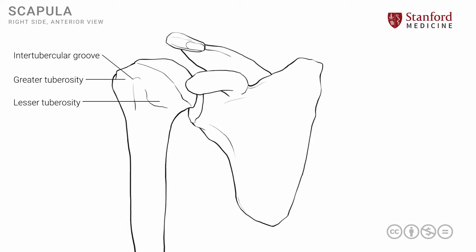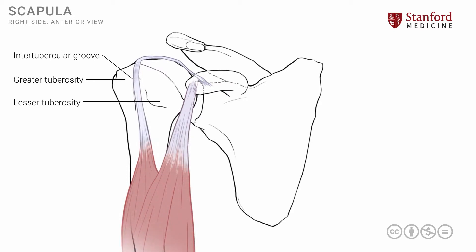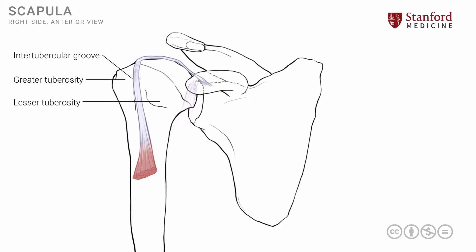There's an important muscle in this region. I'm going to put the entire muscle in briefly and then remove most of it except the part that is in the intertubercular groove. This is the biceps muscle — bi meaning two, seps meaning heads — so it has two heads. The one I'm going to leave behind is known as the long head of the biceps, or biceps brachii, to differentiate it from another biceps muscle in the lower limb. The tendon of this long head of the biceps lies in the intertubercular groove.